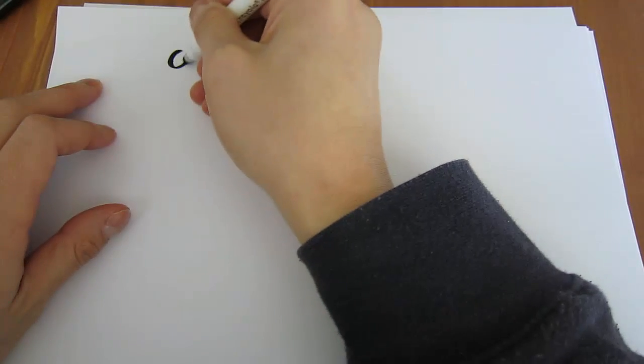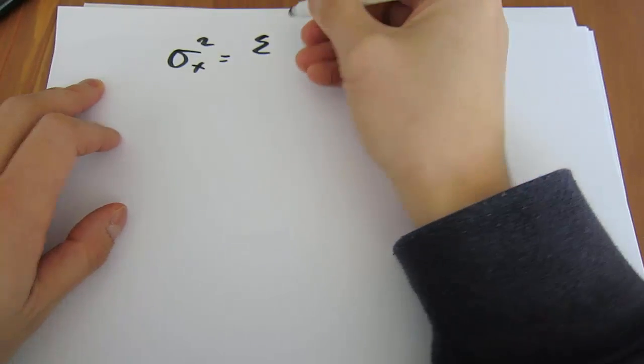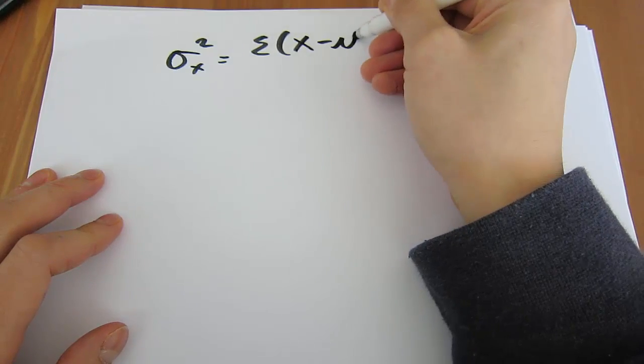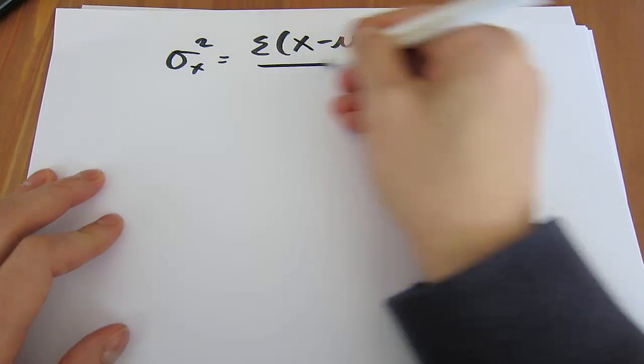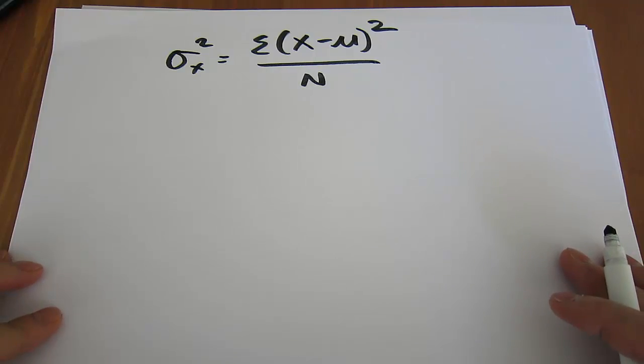Alright, so the variance formula looks something like this. We'll just deal with the population variance formula for now. So you sum up each observation minus the mean, and you square it, divided by n. This might look like it's a bit of a hassle to remember, but it's actually quite intuitive.